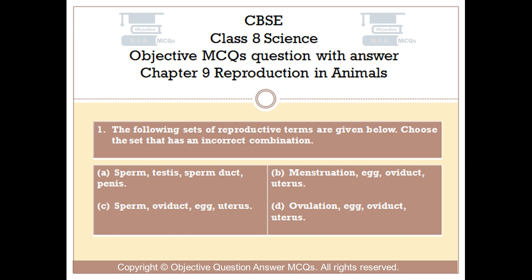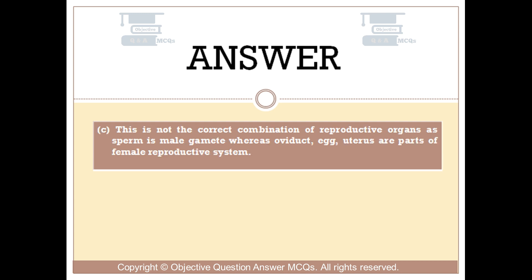The right answer is Option C. This is not the correct combination of reproductive organs, as sperm is a male gamete whereas oviduct, egg, and uterus are parts of the female reproductive system.